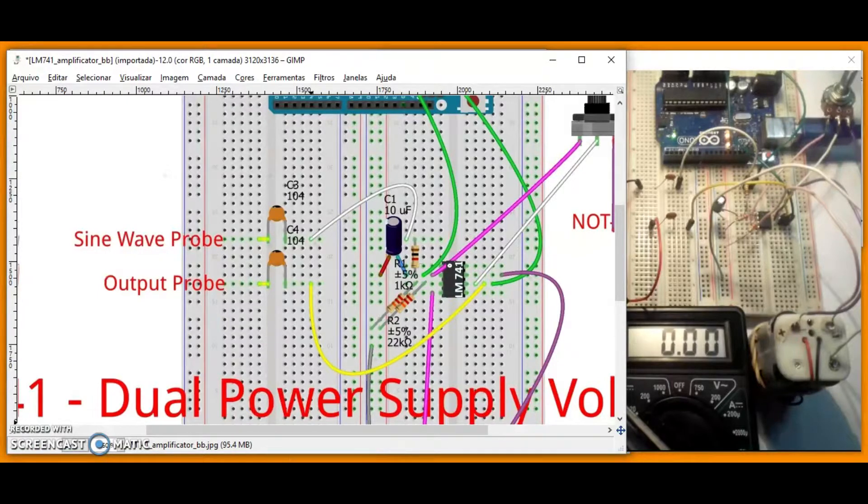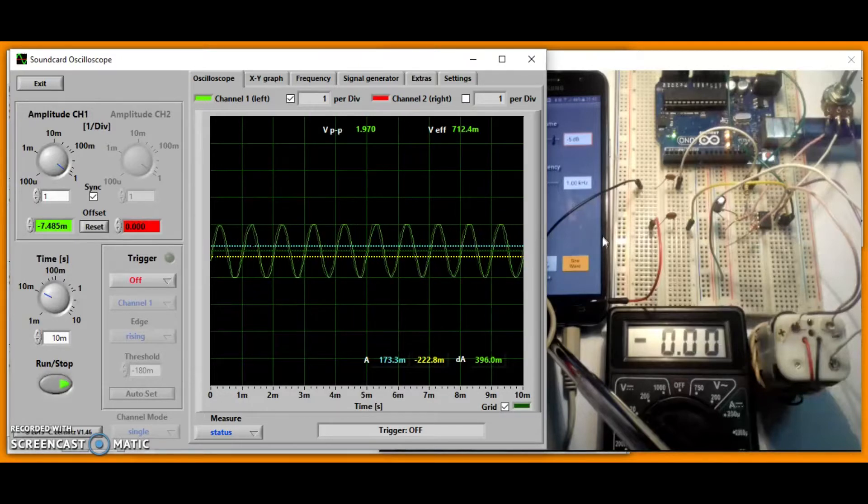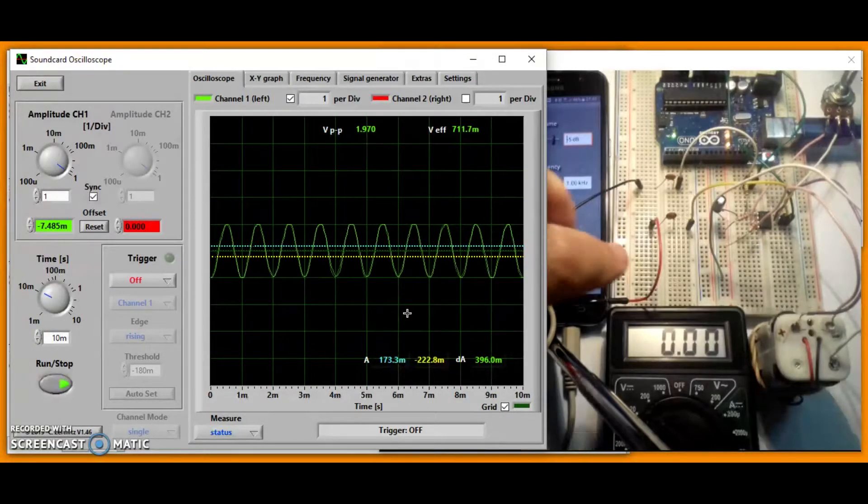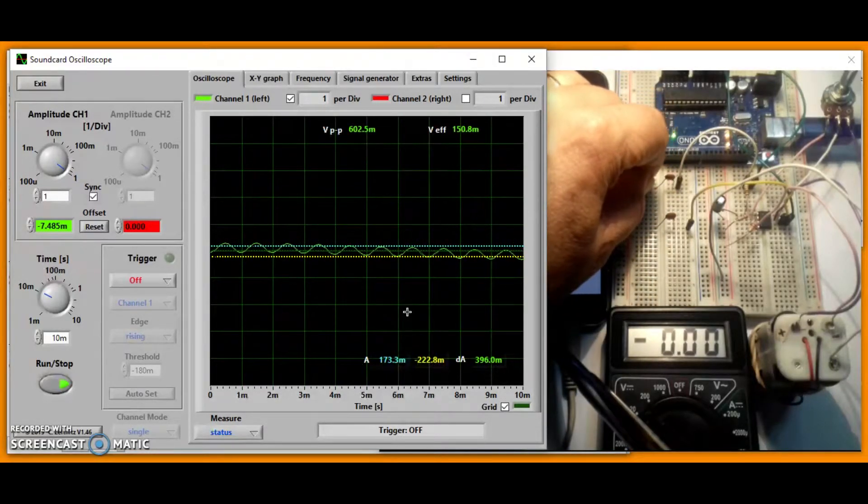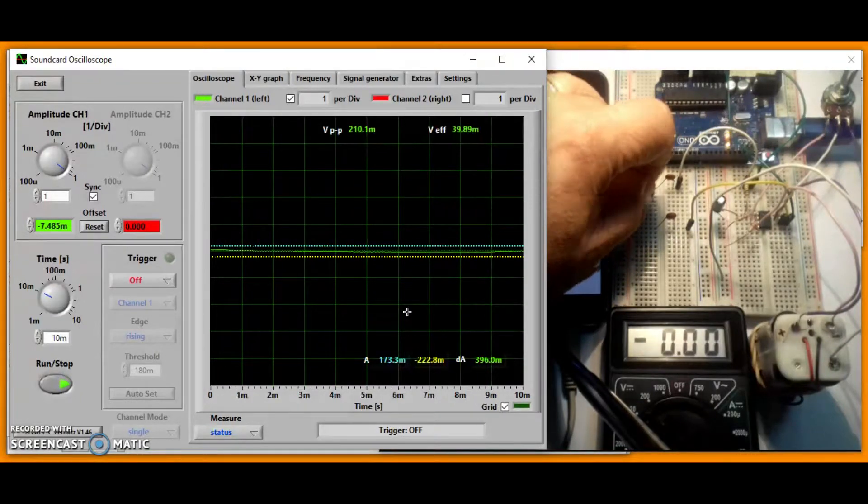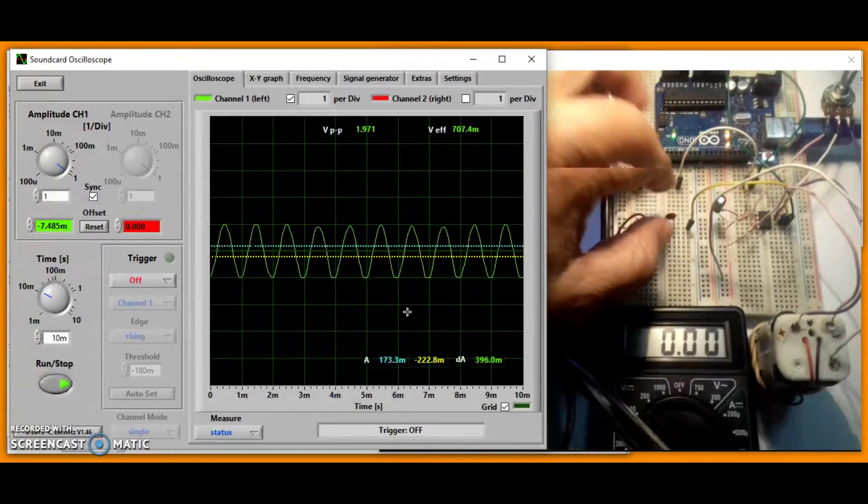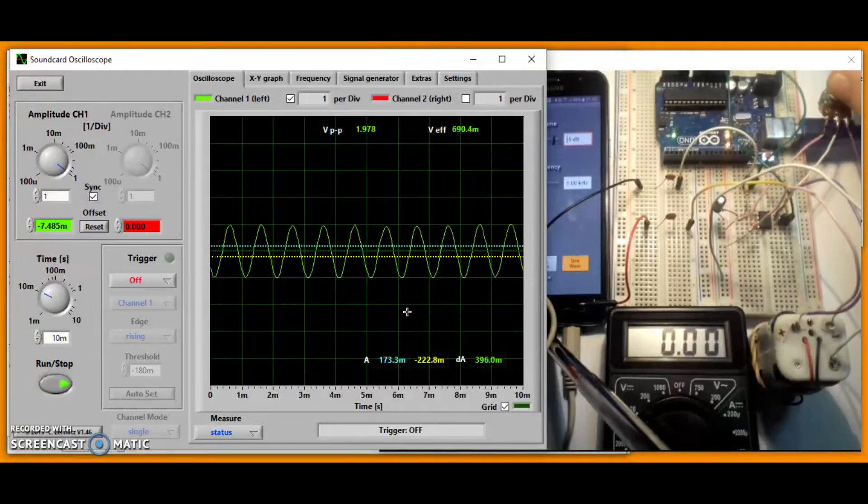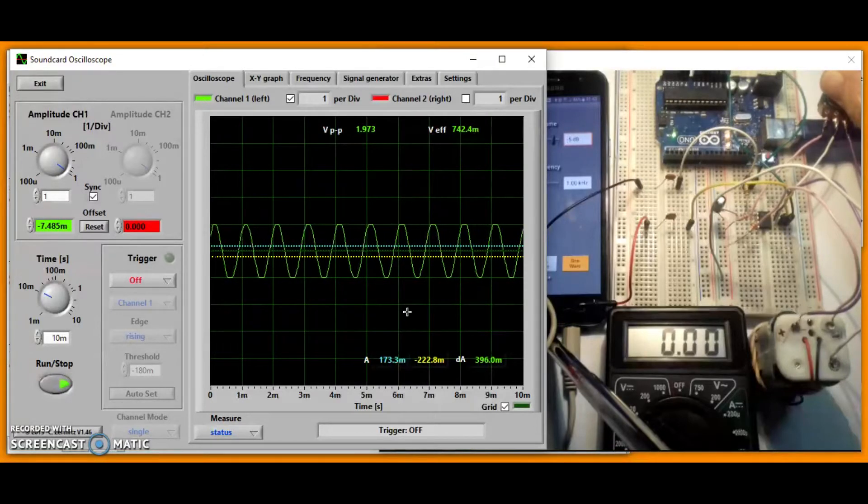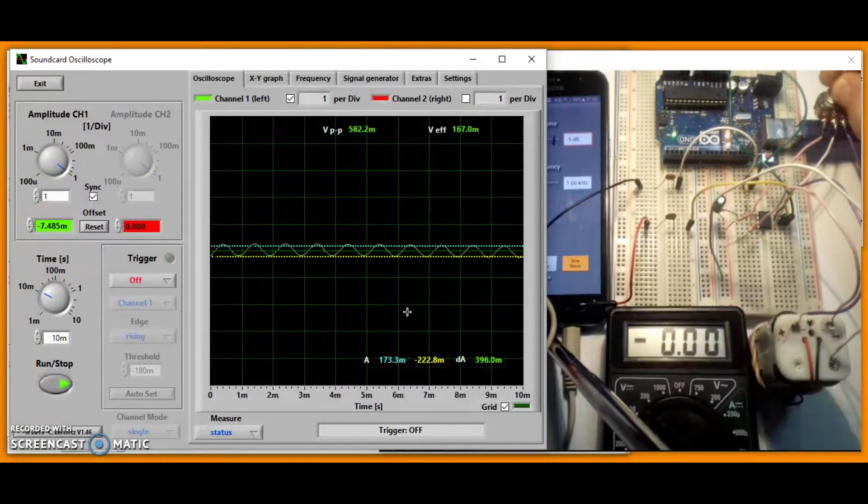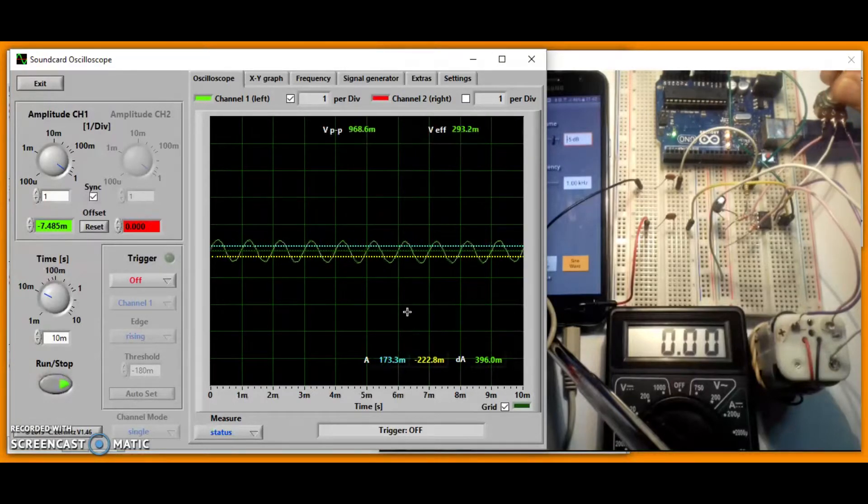Application curve. The waveform in soundcard oscilloscope shows the input and output signal of LM741 inverting amplifier circuit. The first waveform shows the input signal, while the second waveform shows the output signal. The input signal is 615.7 mVpp and the output signal is 1,970 Vpp.